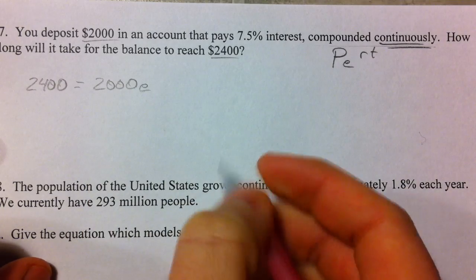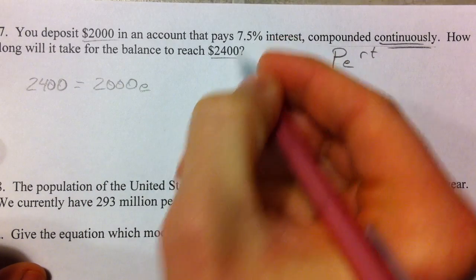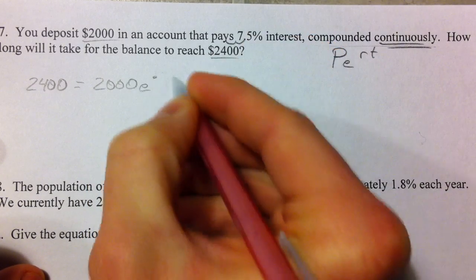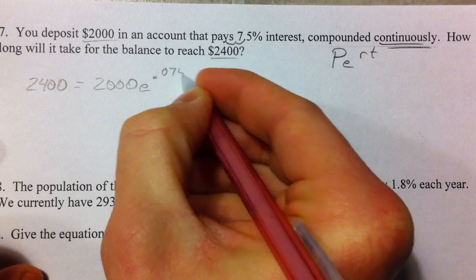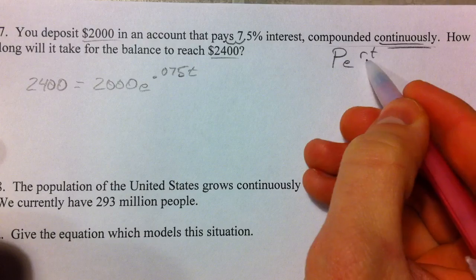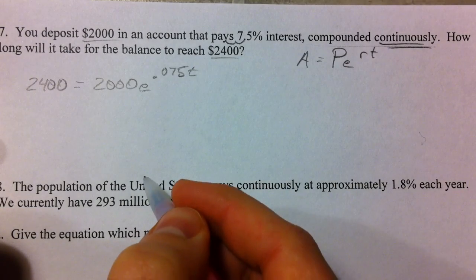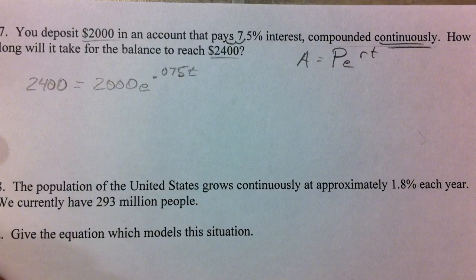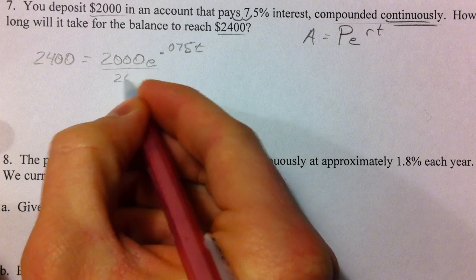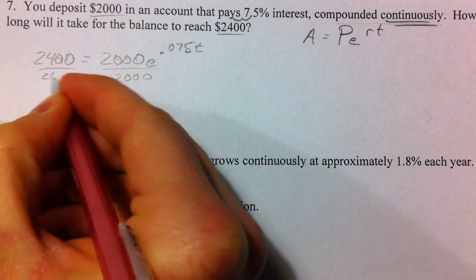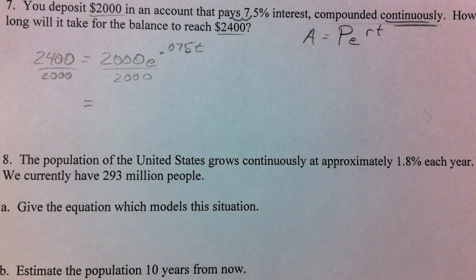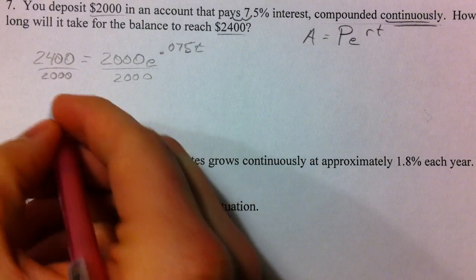E is just our number. 7.5% has to be changed into .075. And we're going to raise that to the RT power like that. So, how do we start solving this for T? Let's divide by the 2,000 first. So, 2,400 divided by 2,000. What do we get?